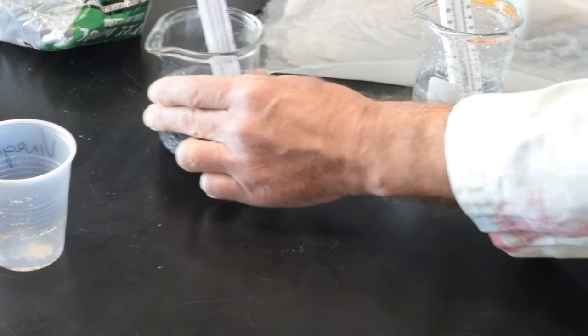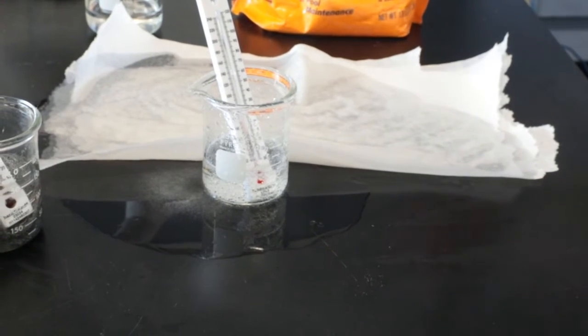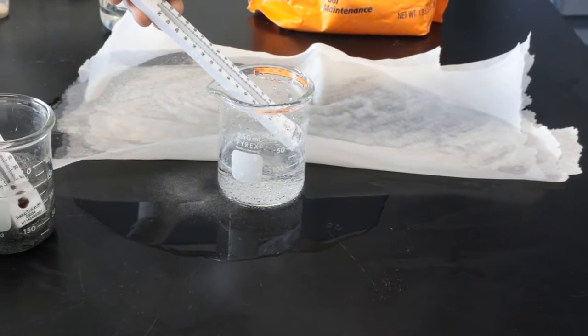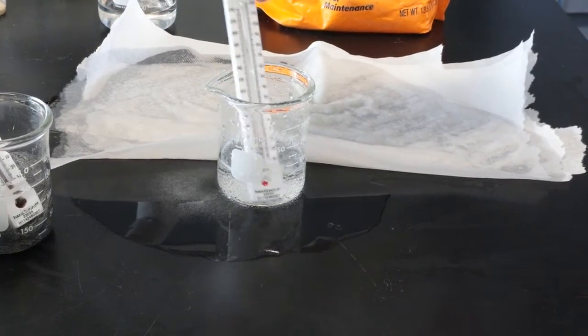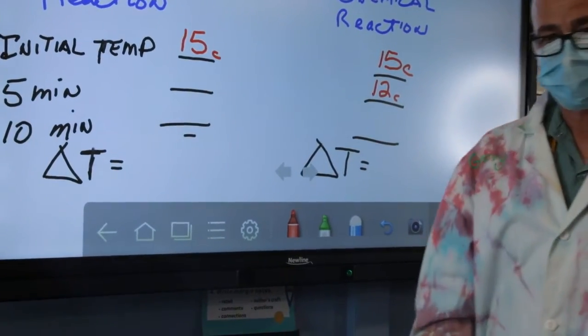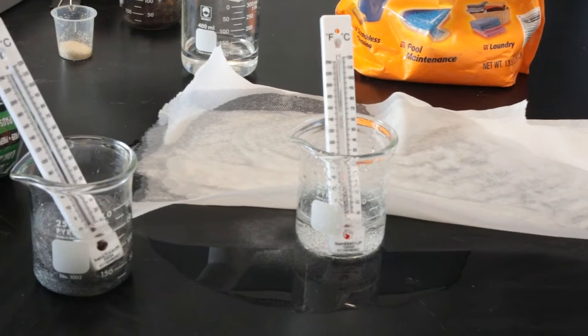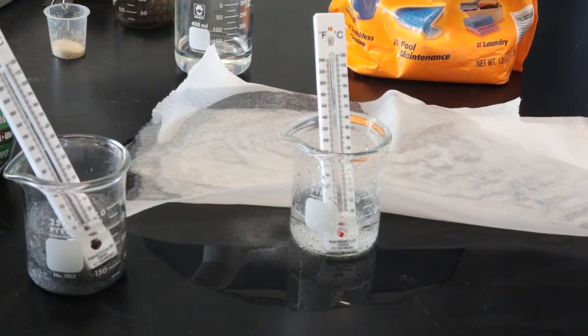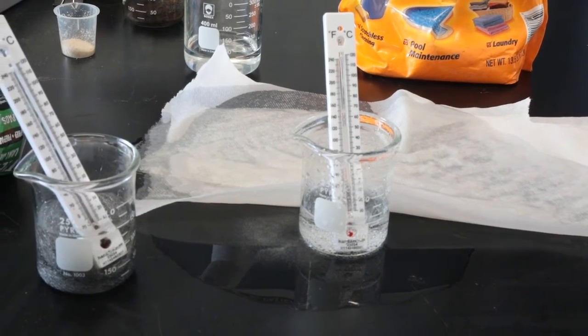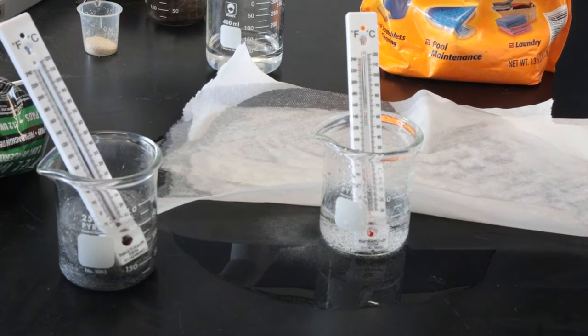We'll let that set a while. Back to our endothermic reaction. So it went from 15 degrees down to 12. So let's add 12 degrees to our chart. We're going to let you finish this one up. Let the acetic acid and baking soda sit for another 10 minutes. Take the reading again. I want three readings on it. And at the end of that, write down delta T, or what we call change in temperature.